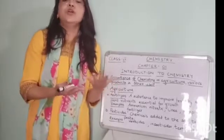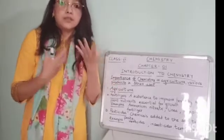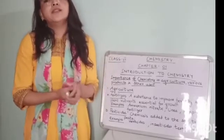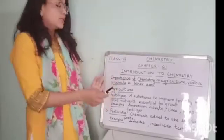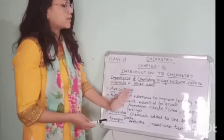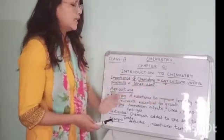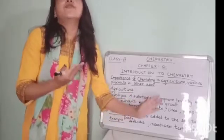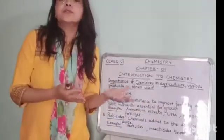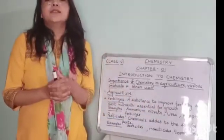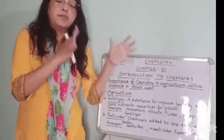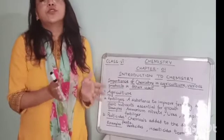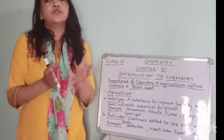The substances which are used to improve the growth of plants are known as fertilizers. Fertilizers are substances that improve fertility and supply plant nutrients essential for growth. There are also some chemicals that are spread on plants or crops to kill insects that are harmful for the plants.